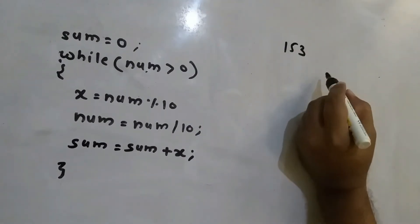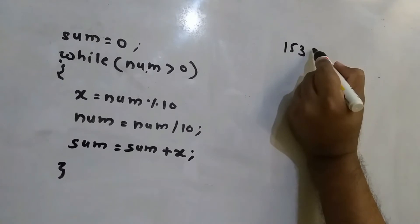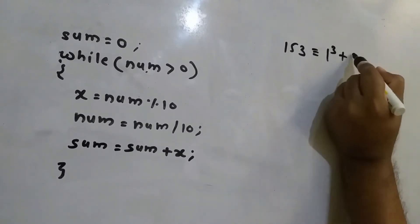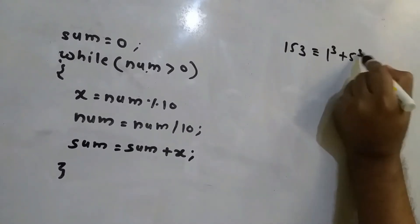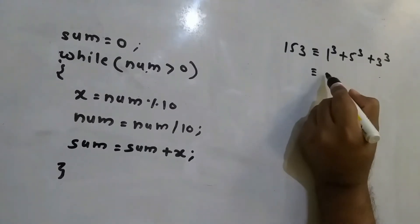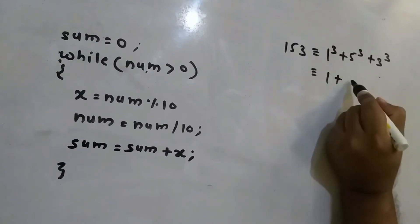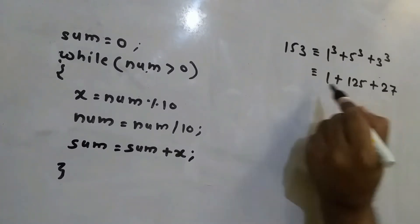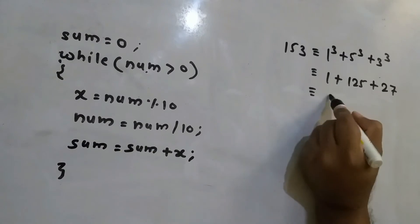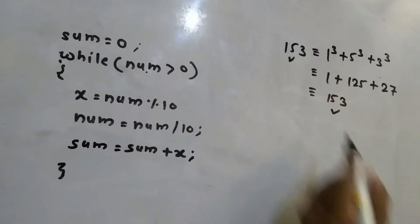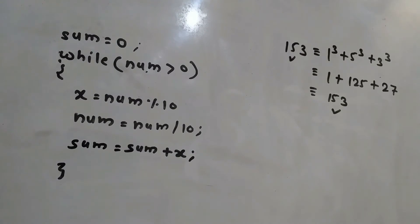If I calculate the sum of the cube of each digit in 153, that will be 1 cube plus 5 cube plus 3 cube. That gives us 1 plus 125 plus 27, which equals 153. So the sum of cubes of each digit equals the original number — that is why it is called an Armstrong number.